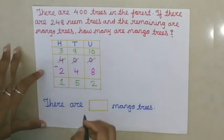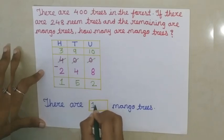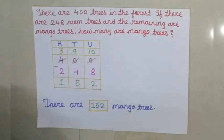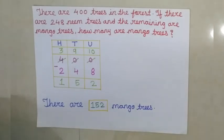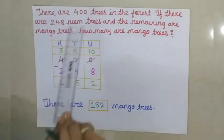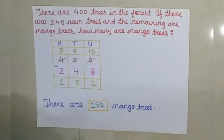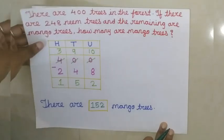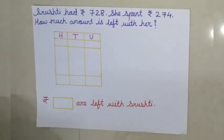So there are 152 mango trees. Understood children. How many mango trees are there in the forest? 152. And how many neem trees are there? 248. So all together, 400 trees are there in the forest. Now I am going to show you one more word problem.